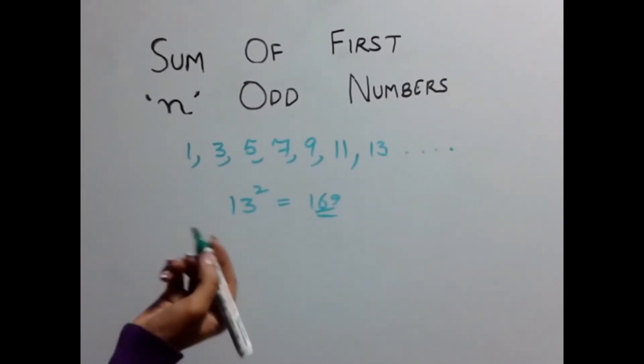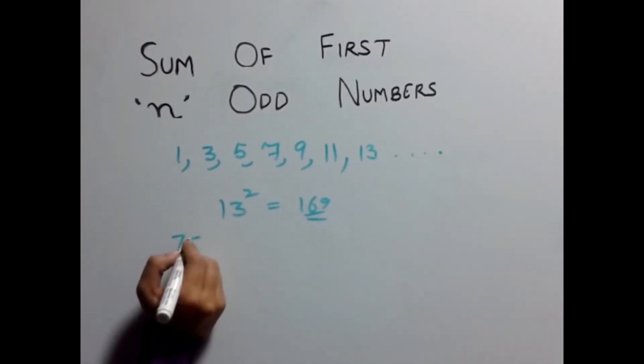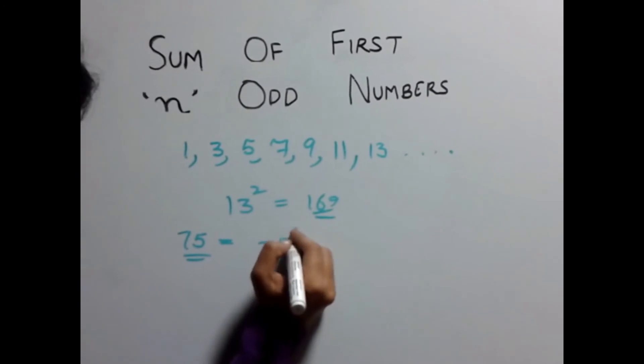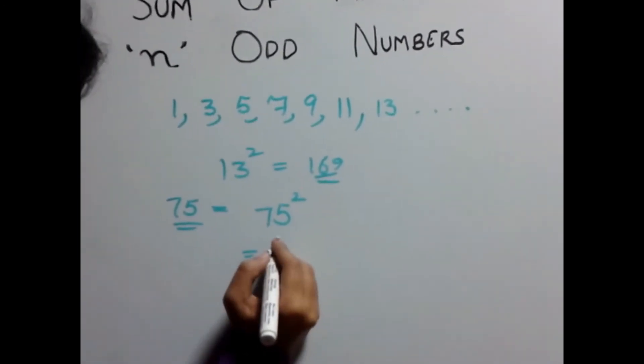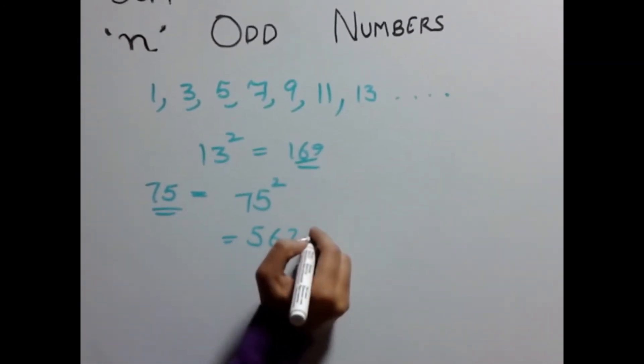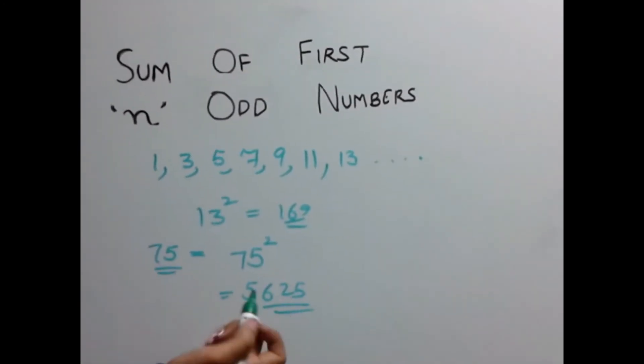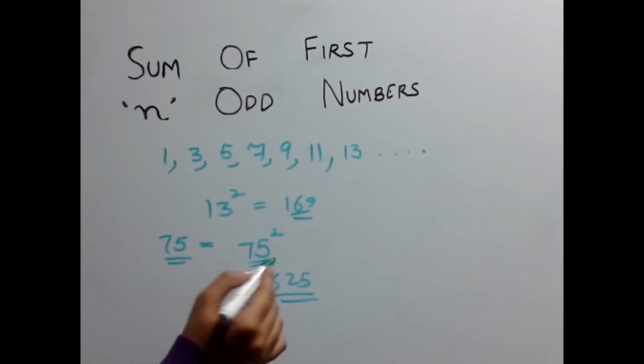If you need to find the sum of first 75 odd numbers, simply square them which gives you 75 squared. 75 squared is 7 into 8 is 56, 5 into 5 is 25, which we have learned in our previous classes on how to square a digit ending in 5.